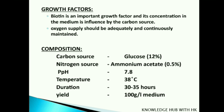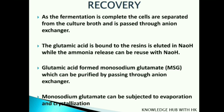Moving on to the fermentation composition: carbon source is glucose at 12 percent, nitrogen source is ammonium acetate at 0.5 percent, pH is 7.8, temperature is 38 degrees Celsius, and duration is 2 to 4 days. At the end of fermentation, the yield is 100 grams per liter of medium.